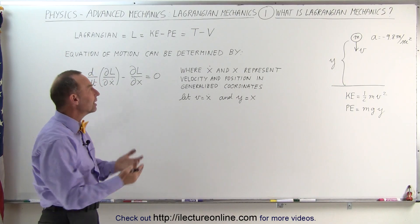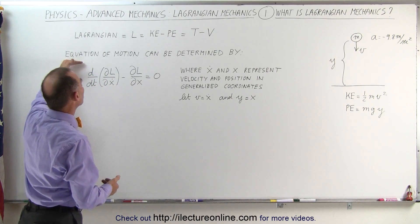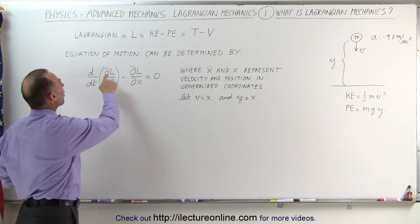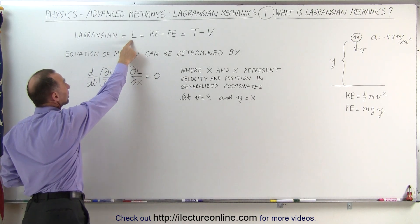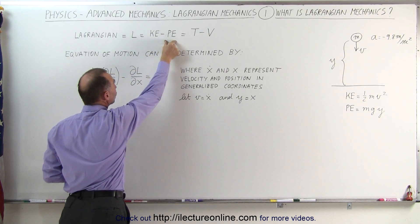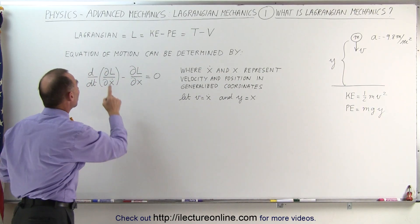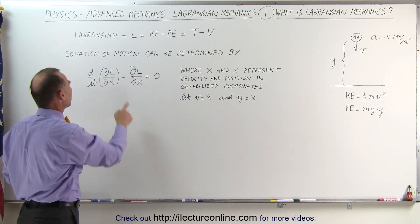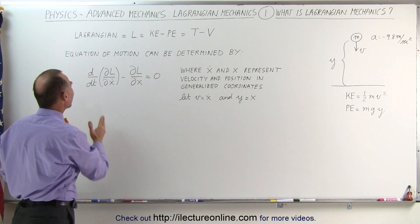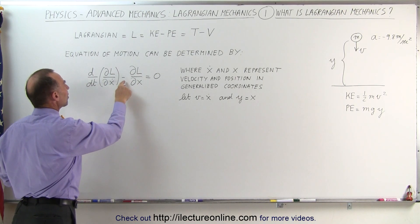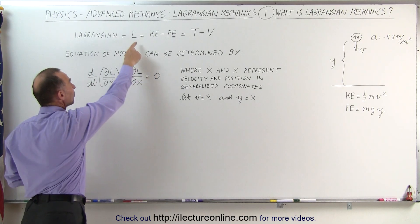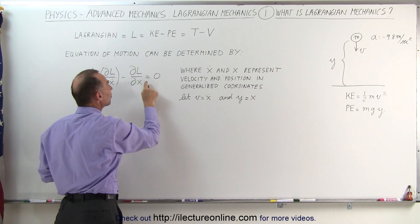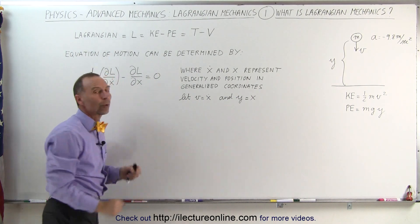So how do we find the equations of motion? The equations of motion can be determined using the Lagrangian with this equation: we take the partial derivative of L — the difference between kinetic and potential energy — with respect to velocity (x-dot, the first derivative of position with respect to time), take the time derivative of that, then subtract the partial derivative of L with respect to position, and set it equal to zero. From this we can determine the equations of motion.